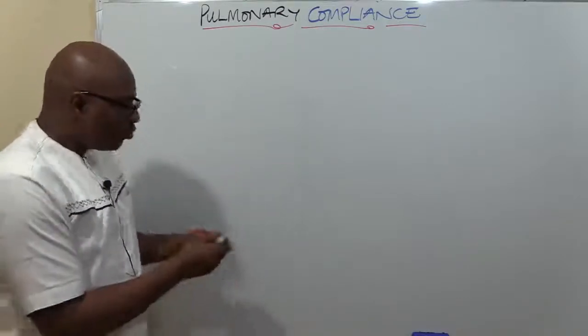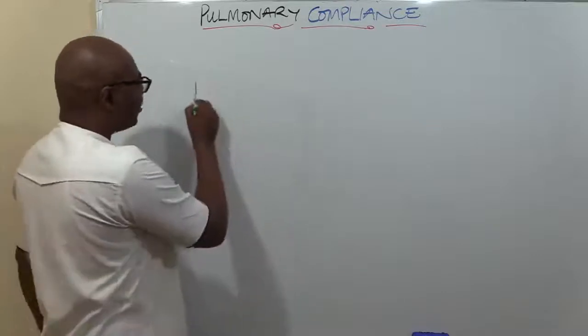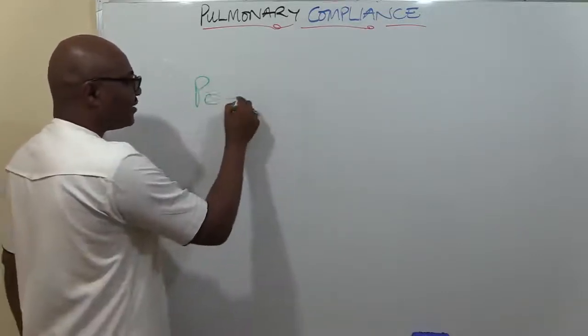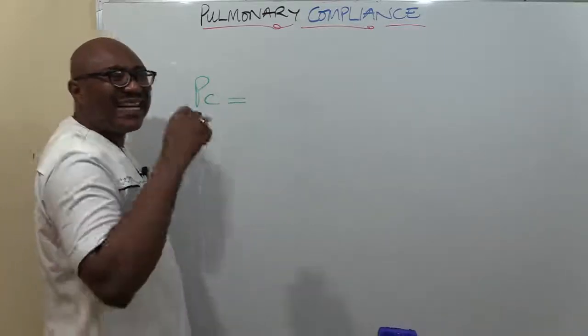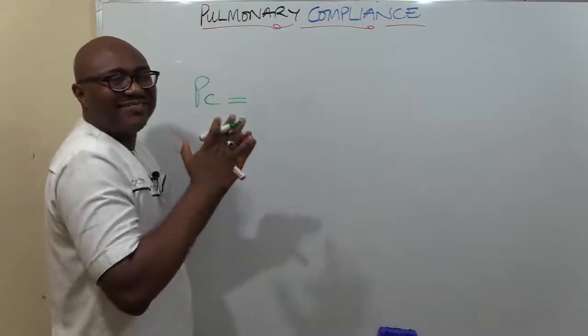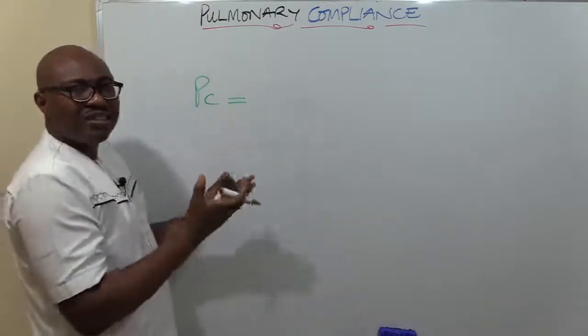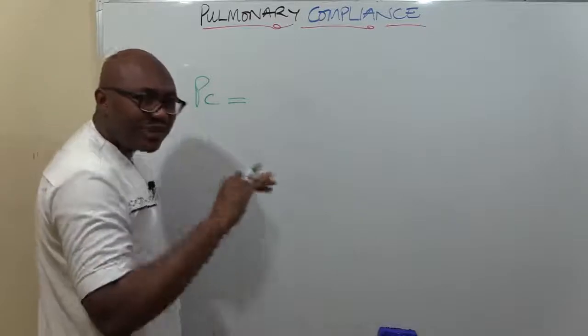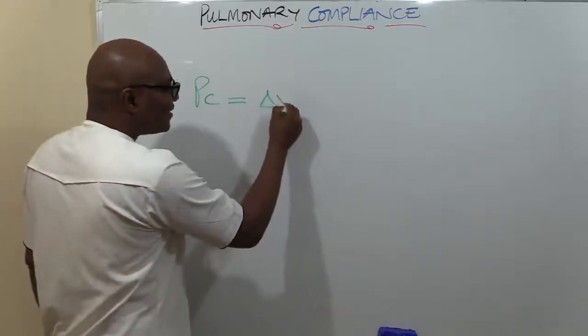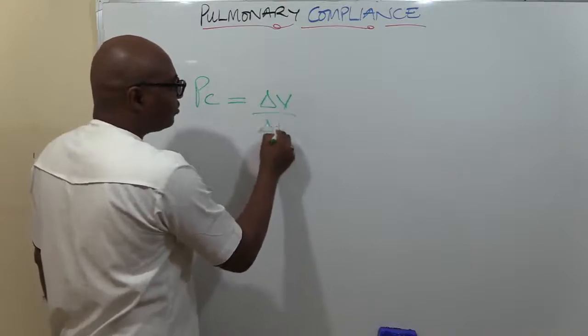You can put this in an equation. Pulmonary compliance, let's put it PC, is the extent of the change in volume as it relates to a change in pressure.